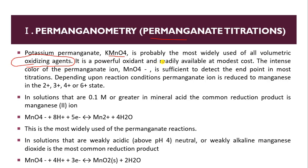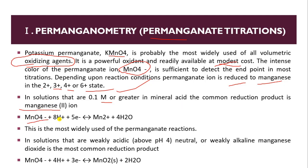KMnO4 is a powerful oxidant and readily available at a modest cost. The intense color of the permanganate ion (MnO4⁻) is sufficient to detect the endpoint in most titrations. Depending upon the reaction conditions, permanganate ion is reduced to manganese in the 2+, 3+, 4+, or 6+ state. In solutions of 0.1 molar or greater in a mineral acid, the common reduction product is manganese(II). When MnO4⁻ is added in acidic conditions (H⁺ present), Mn²⁺ is produced.